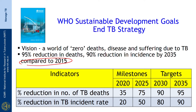Towards this end, certain targets have been set. To achieve a 95 percent reduction in TB deaths by 2035, we need to reach interim targets of 35, 75, and 90 percent over 2020, 2025, and 2030. Similarly, to reach a 90 percent reduction in TB incidence, we need to have targets every 5 years.